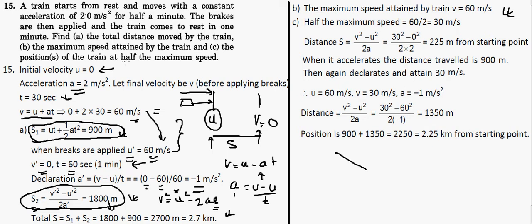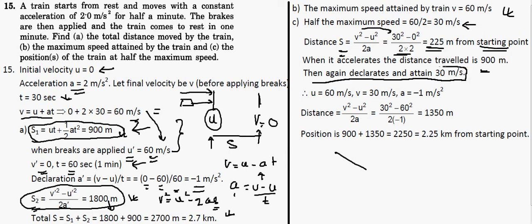Next, we need to find the position of the train at half the maximum speed. Half of 60 is 30 m/s. During the acceleration phase, using v² = u² + 2as with u = 0 and v = 30, the distance traveled is 225 meters — wait, let me clarify. When the train is at rest the distance traveled in the acceleration phase is 900 meters. Then it decelerates from 60 m/s down to 30 m/s.